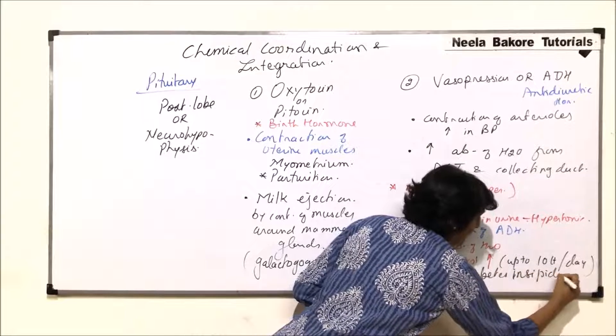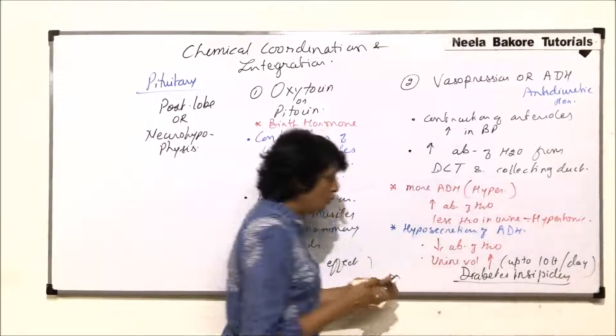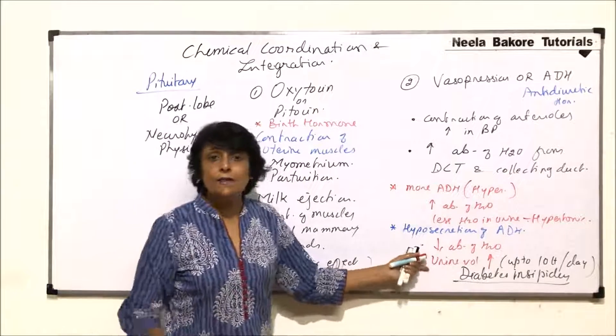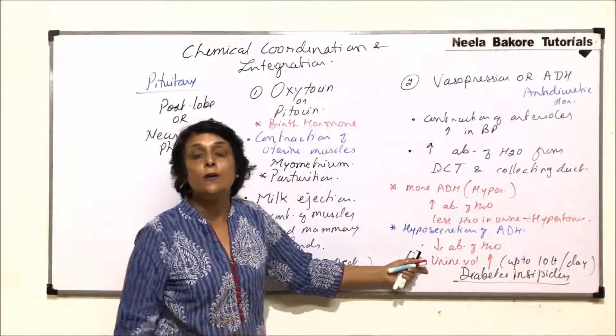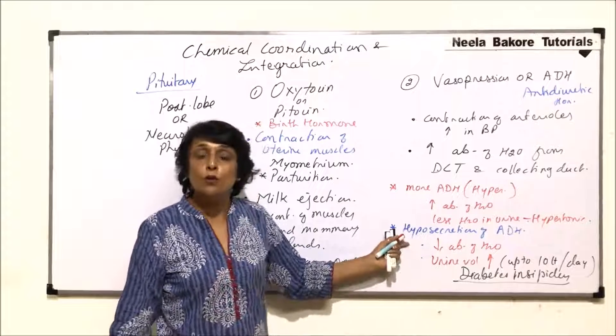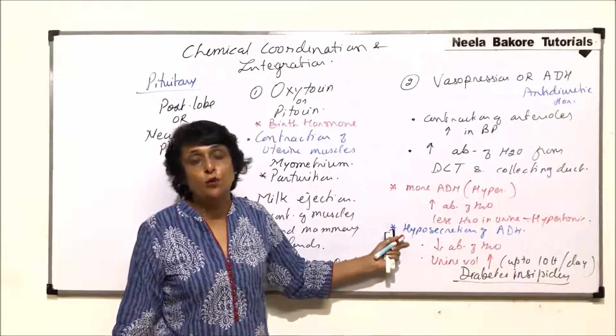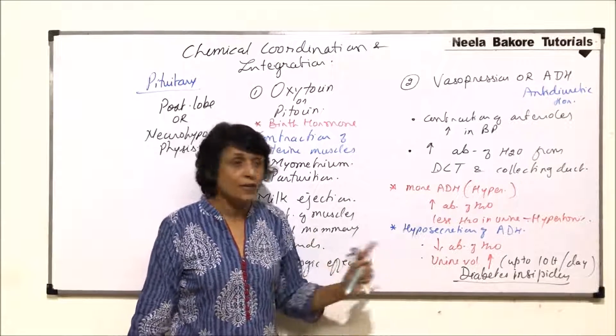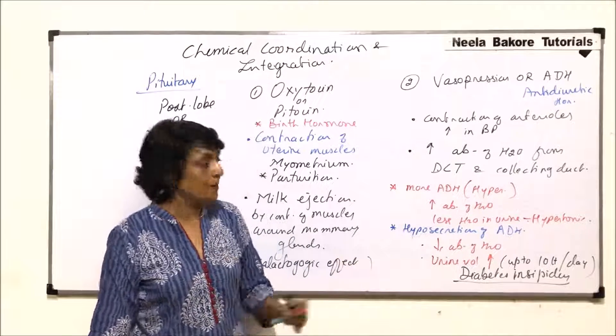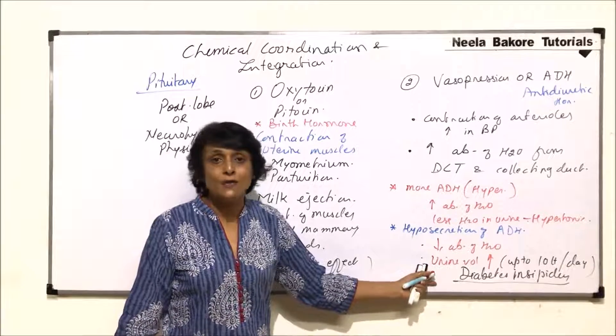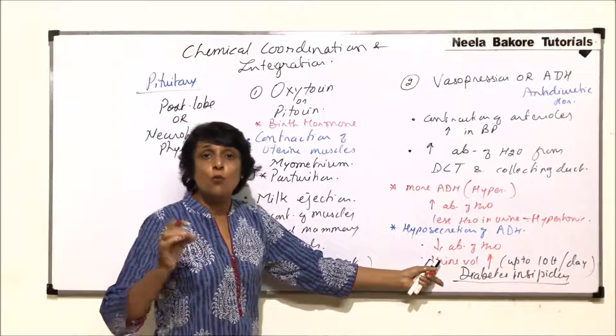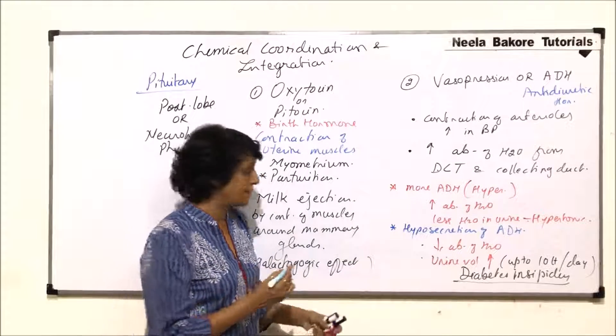Diabetes insipidus - in this the urine volume increases but there is no sugar in the urine. The reason why this urine volume has gone up is because absorption has not taken place - absorption of water. And the hormone which is responsible for this absorption of water is ADH. So in case of hyposecretion, it may result in diabetes insipidus.